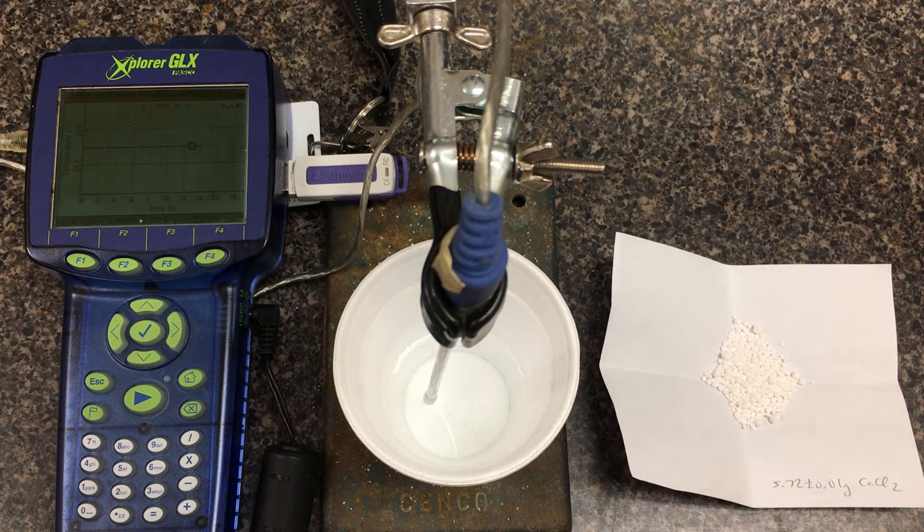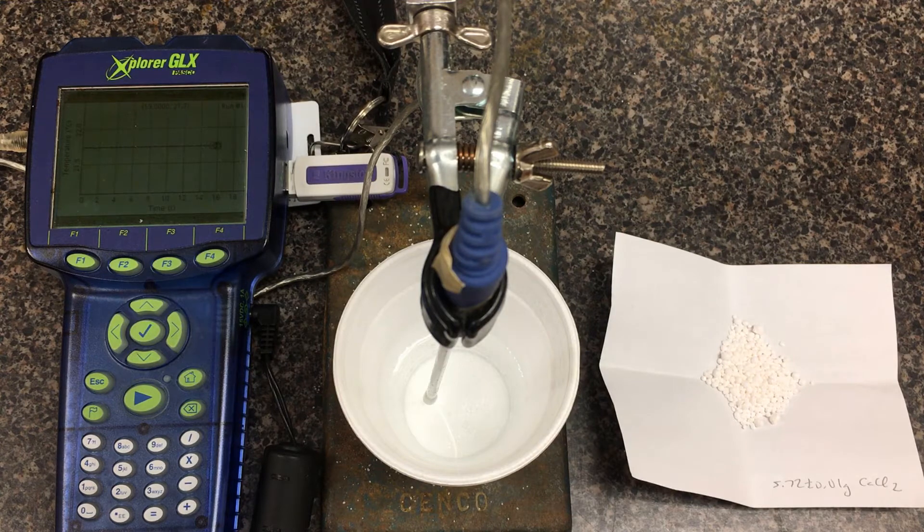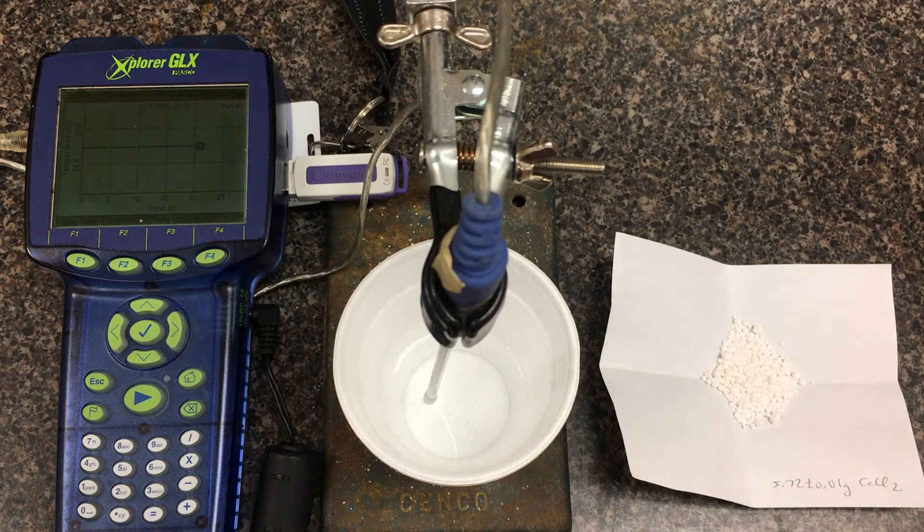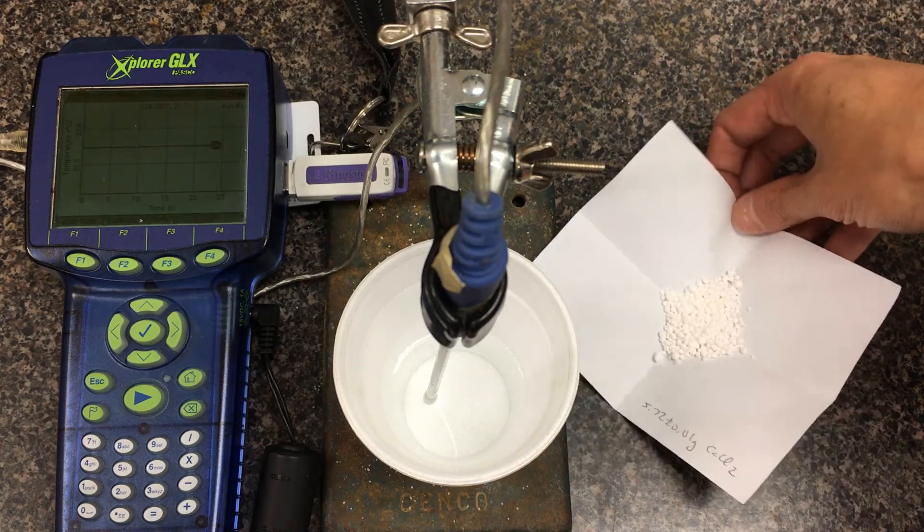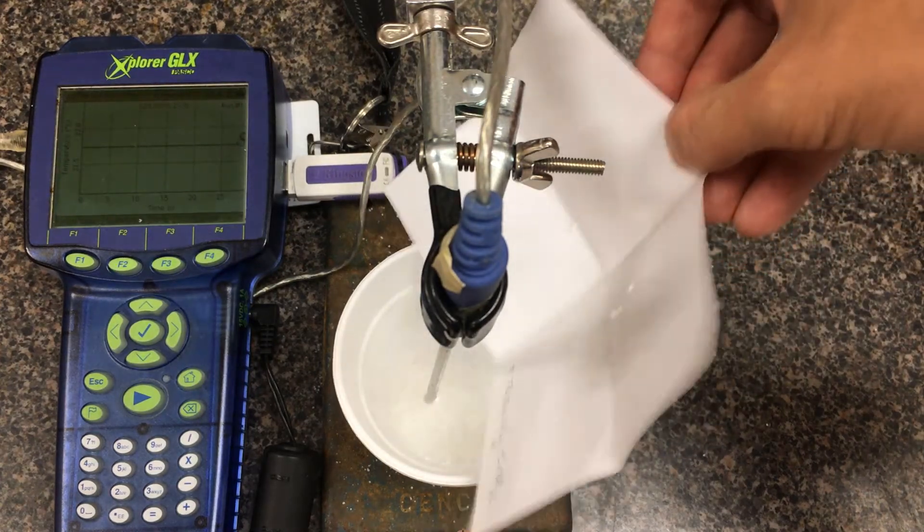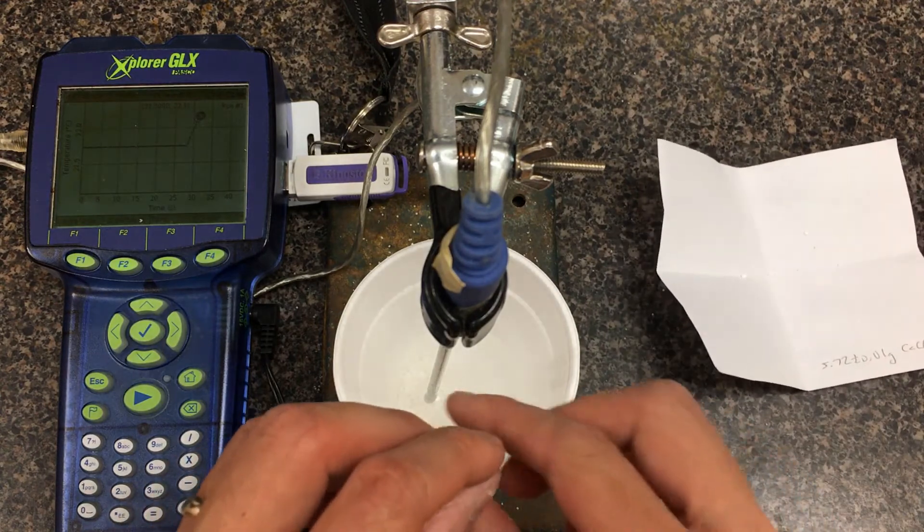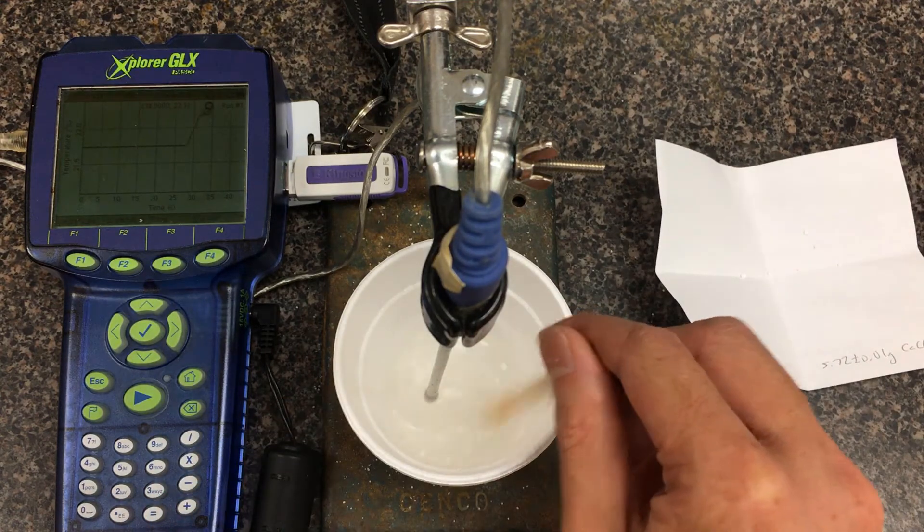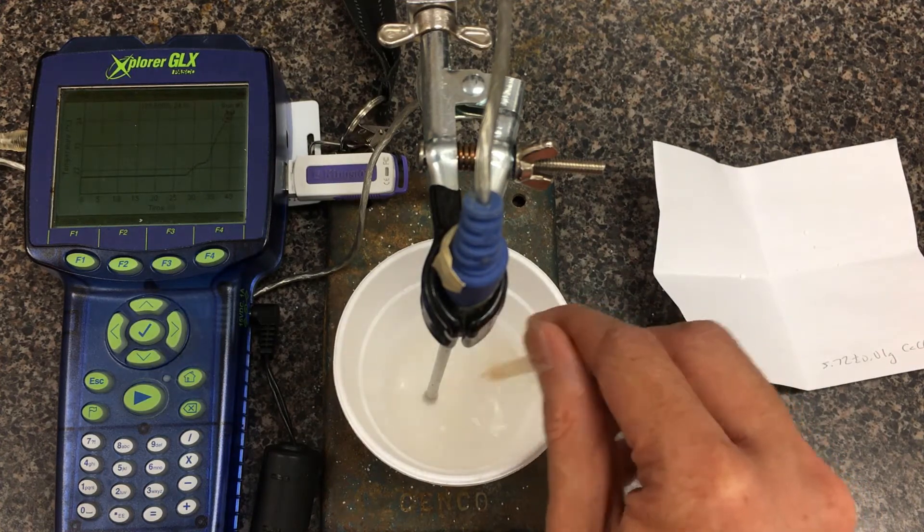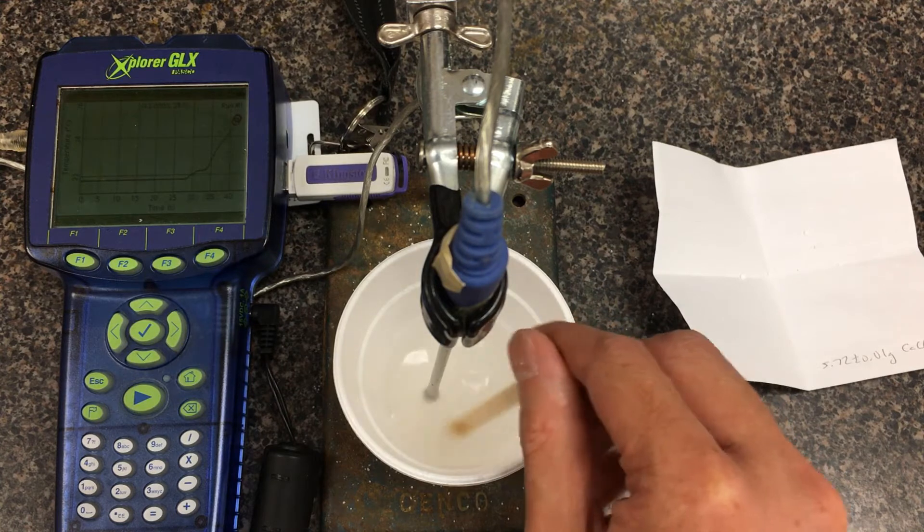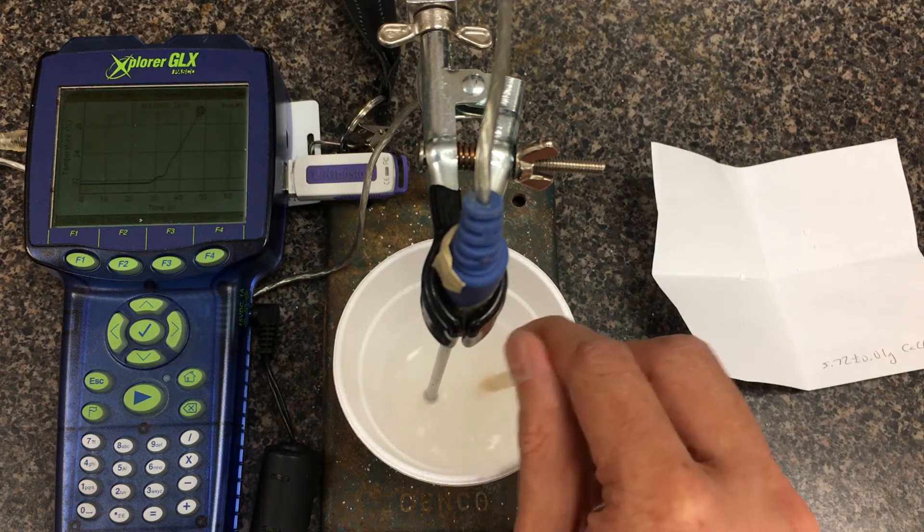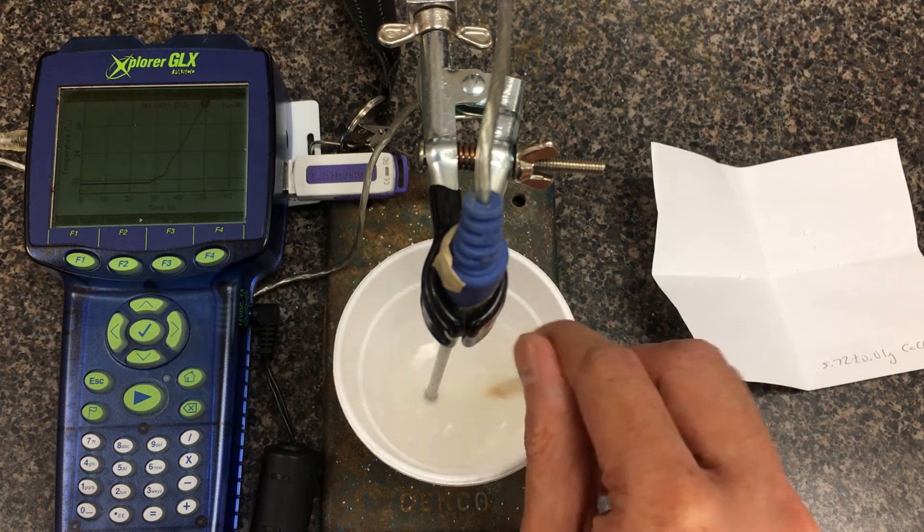Give it a couple seconds to get a baseline. If you want to auto-scale, press F1 to zoom in. I have my wooden splint ready to do any stirring. I'm going to minimize heat loss if we can. We'll slide this in. I'm going to fold this in, so that gets in. Just doing a little bit of stirring.